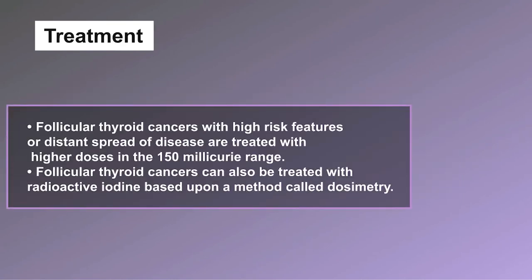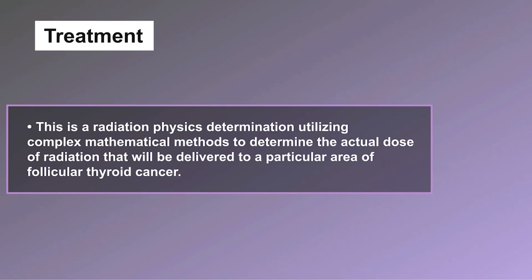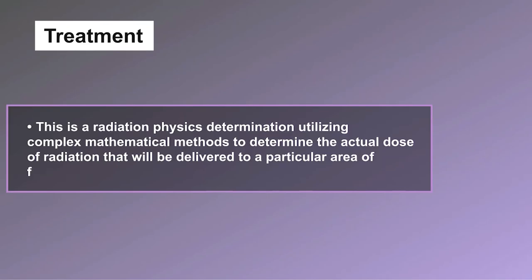Treatment: follicular thyroid cancers with high-risk features or distant spread of disease are treated with higher doses in the 150 millicurie range. Follicular thyroid cancers can also be treated with radioactive iodine based upon a method called dosimetry — a radiation physics determination utilizing complex mathematical methods to determine the actual dose of radiation delivered to a particular area of follicular thyroid cancer.